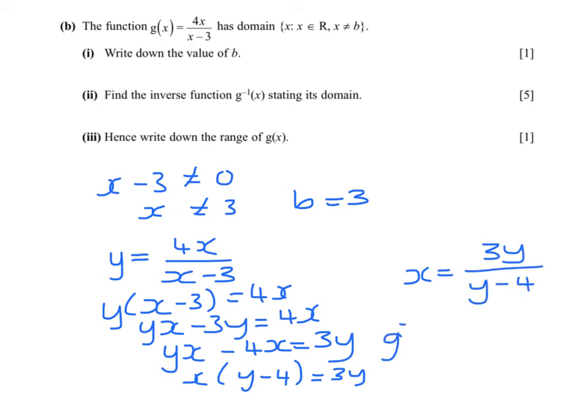So the inverse function of x would be 3x over x minus 4. We replace the x and the y. And our domain would be that x is real and that it cannot equal 4. And that's for exactly the same reason as the answer I gave in part 1. We cannot have 0 in the denominator.